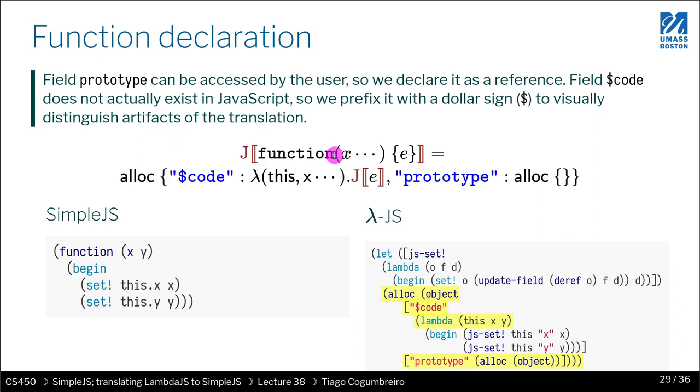Originally we have a function, right, that takes a certain number of parameters. We have to make explicit this. So we need to add a new parameter to the lambda, right? When we create a lambda from the source language.